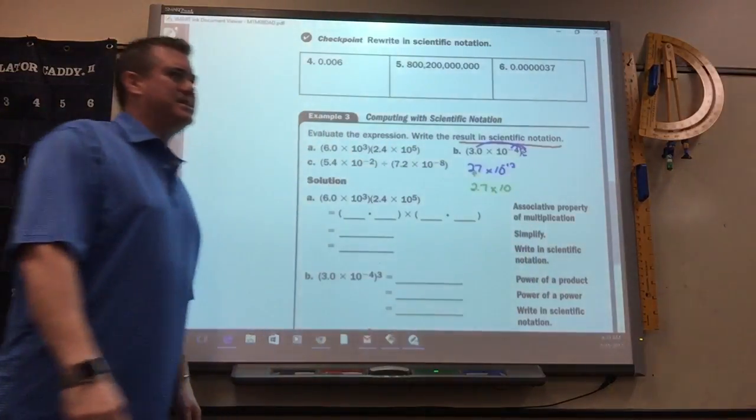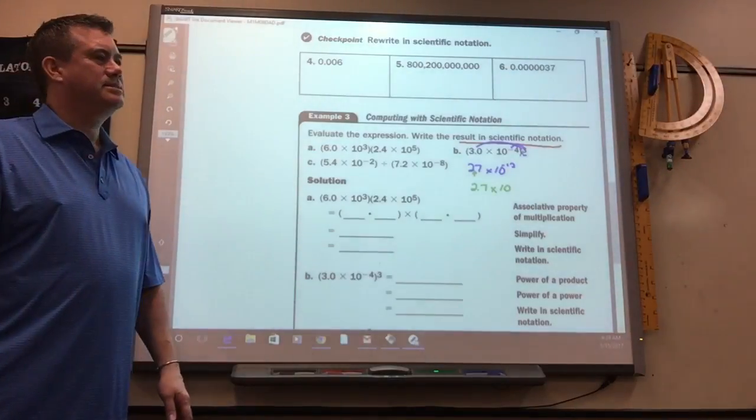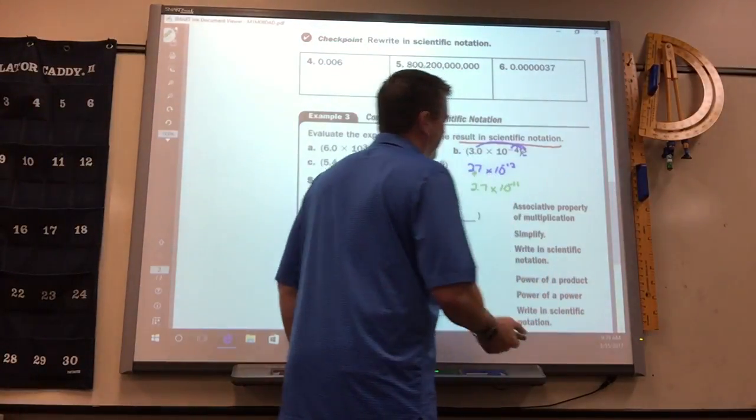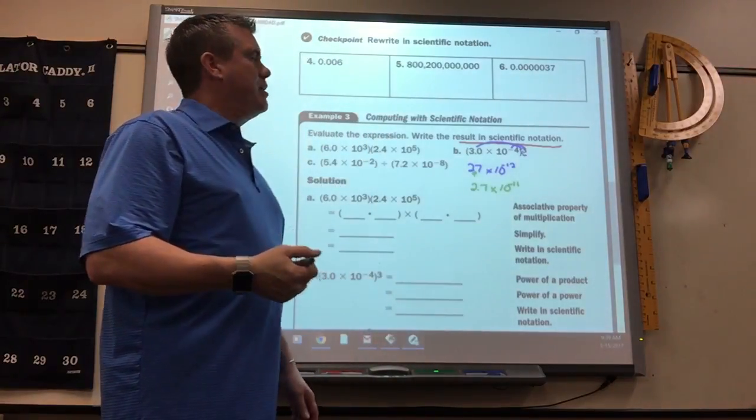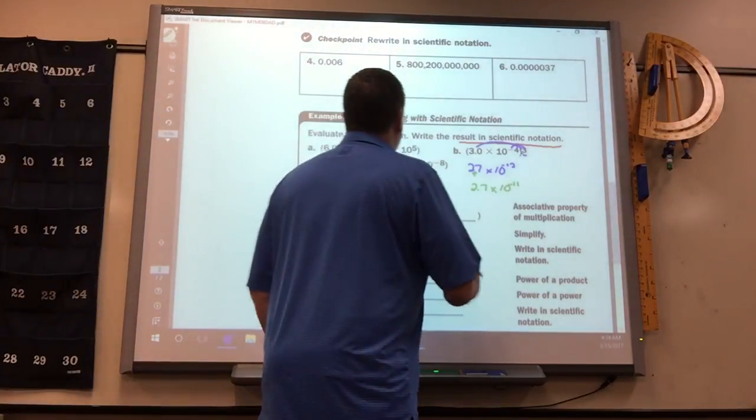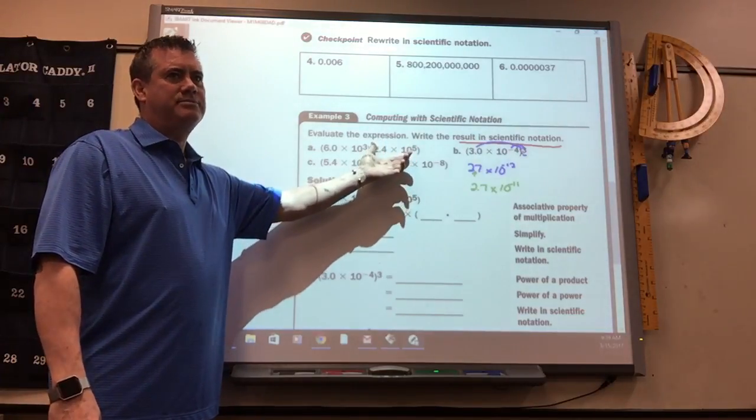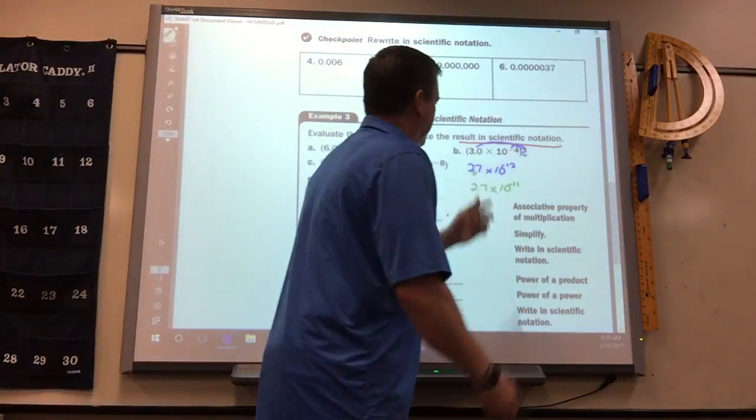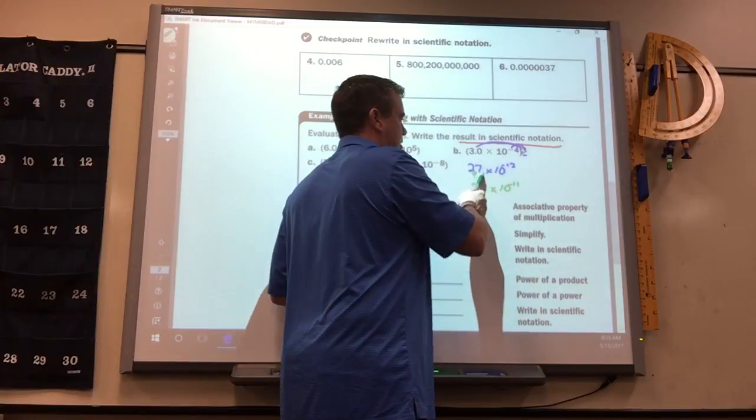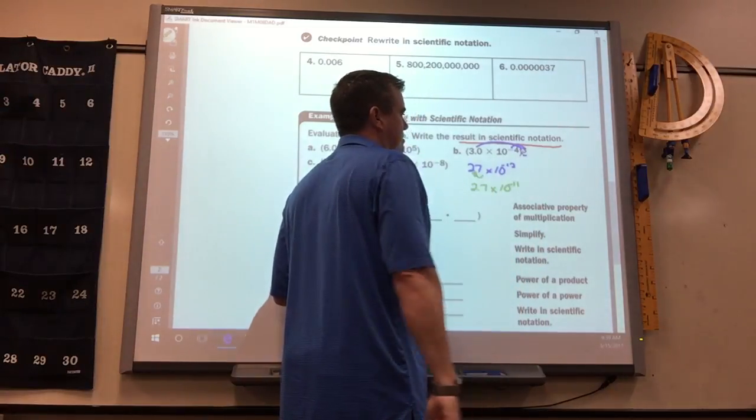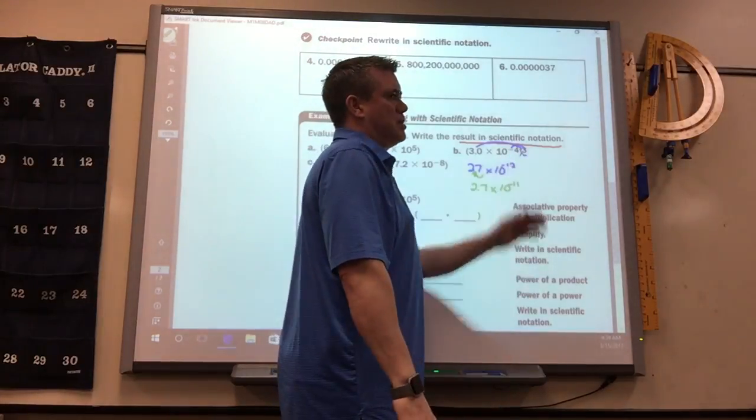Now, again, this is a tricky one because it's a negative number. Negative 11. It would be negative 11. What you've got to do on these is you've got to add. Like, here we had 10 to the 8th. We had to add 1 to get to 9, right? If it's too far this way, you've got to add. So, I've got to add one more spot. So, negative 12 plus 1.